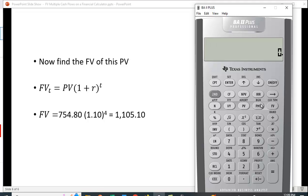I'll use the time value of money function keys. 4 for n. Interest rate is 10 percent. Present value is 754.80. And we're going to compute the future value. Oops, sorry about that. 754.80. Hit the PV. Now hit compute future value. And again we get $1,105.10.